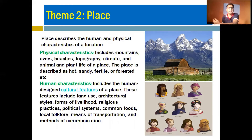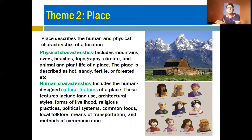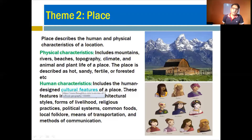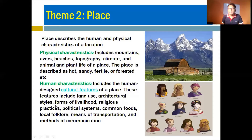When you are in any place, you will see its physical characteristics — the landforms like mountains and rivers, whether there is a forest, and also its climatic condition and soil condition, whether it is sandy, fertile, or has a mild or hot climate. Physical characters are determined by topography, climate, and plant and animal characteristics. Human characters include human-designed cultural features of a place.